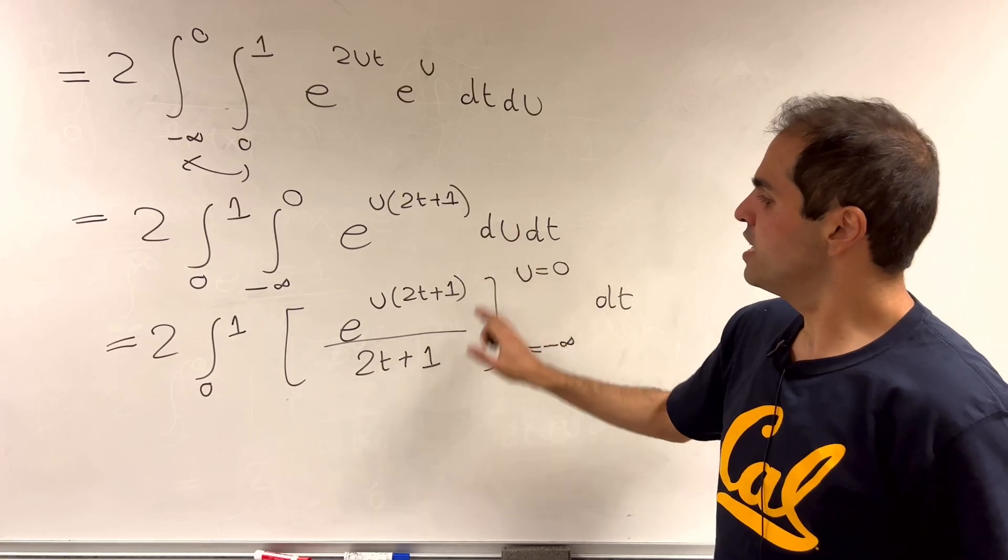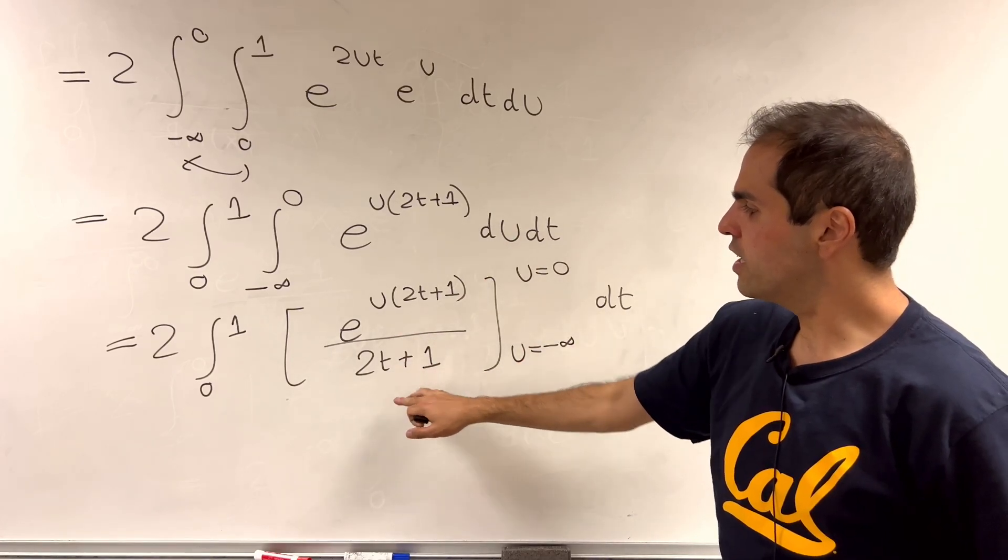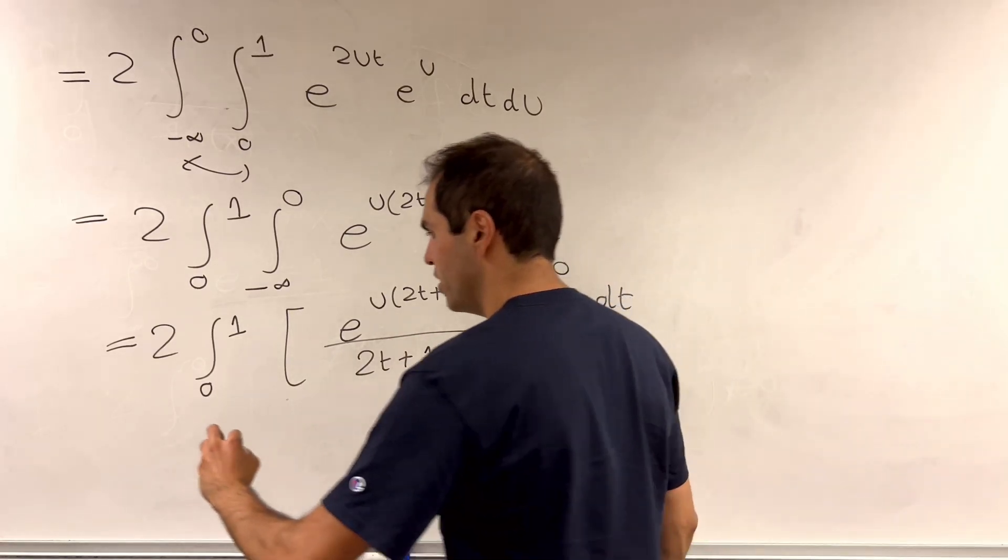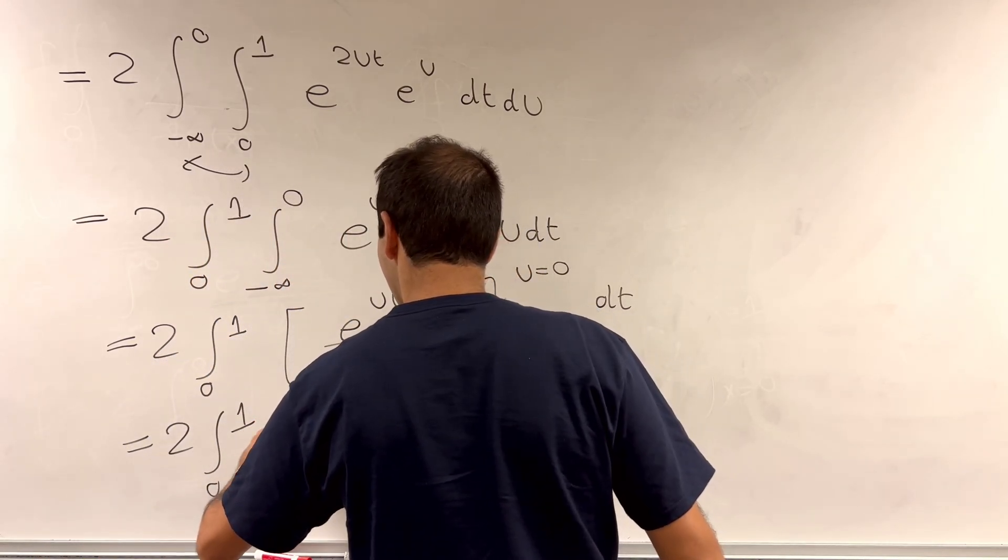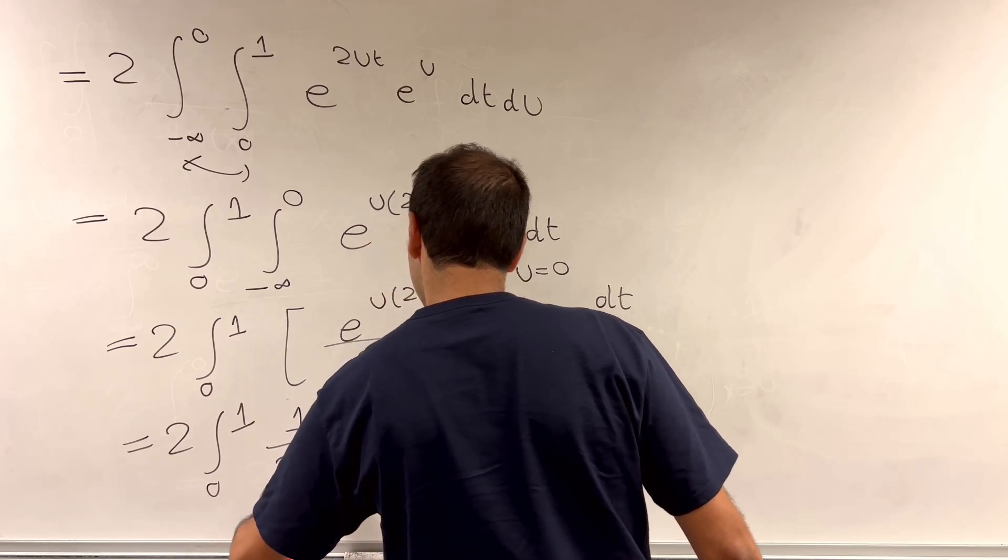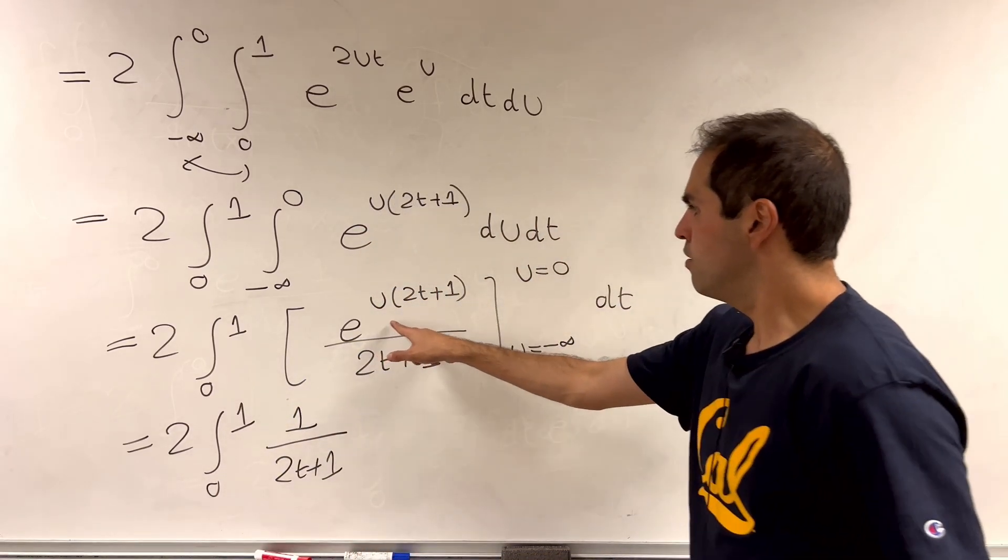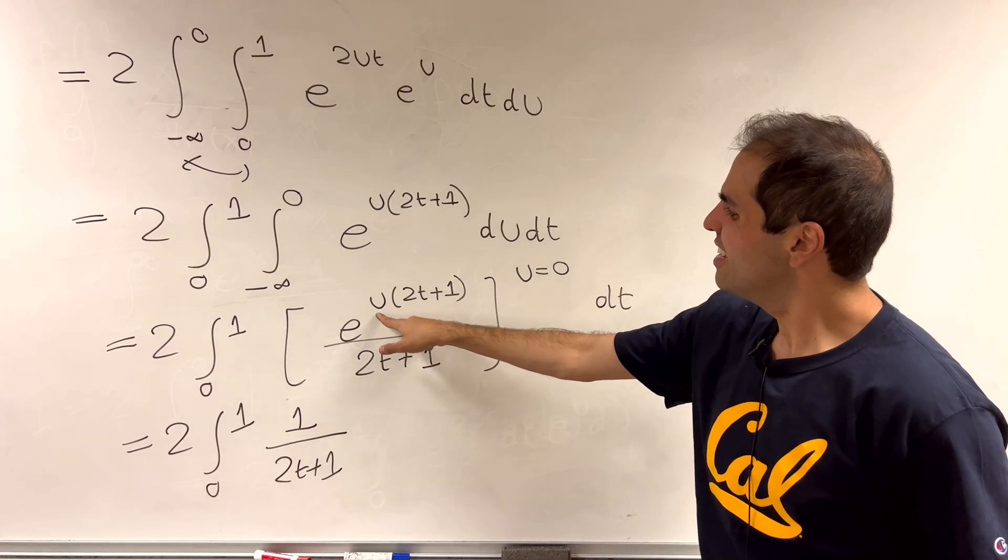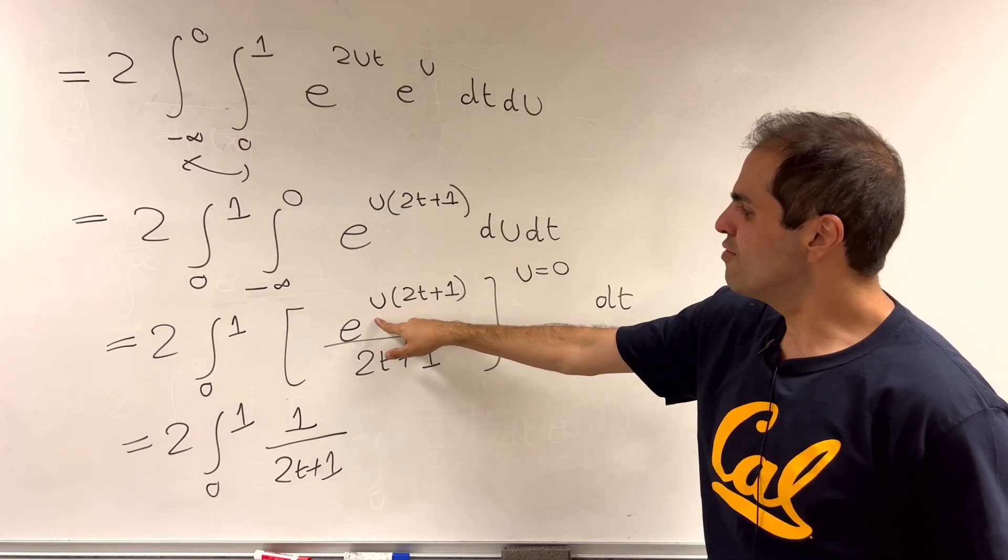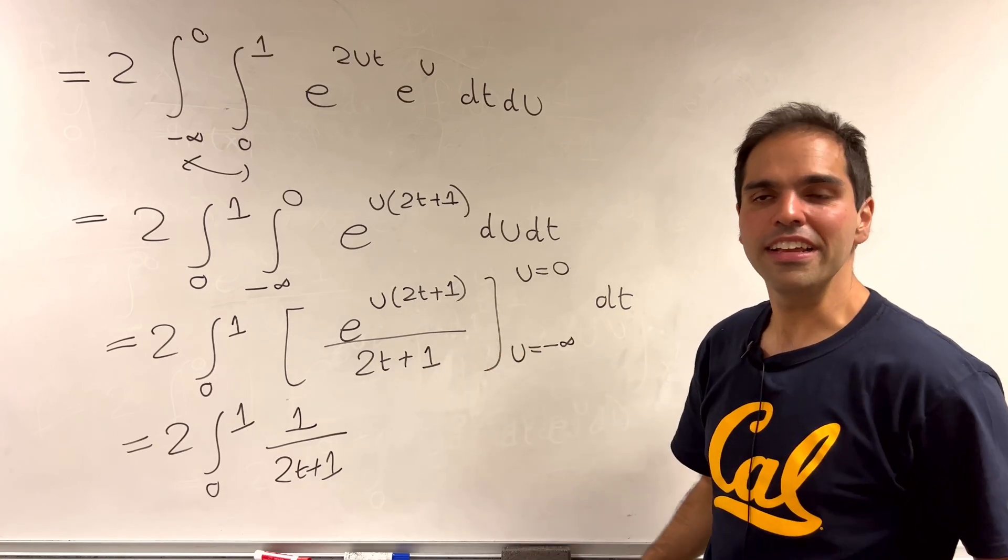Now, e of 0, that is 1 so we get 1 over 2t plus 1, so 2 times integral from 0 to infinity of 1 over 2t plus 1 and well, I'm assuming t is positive because t is from 0 to 1 so e of minus infinity here is 0.